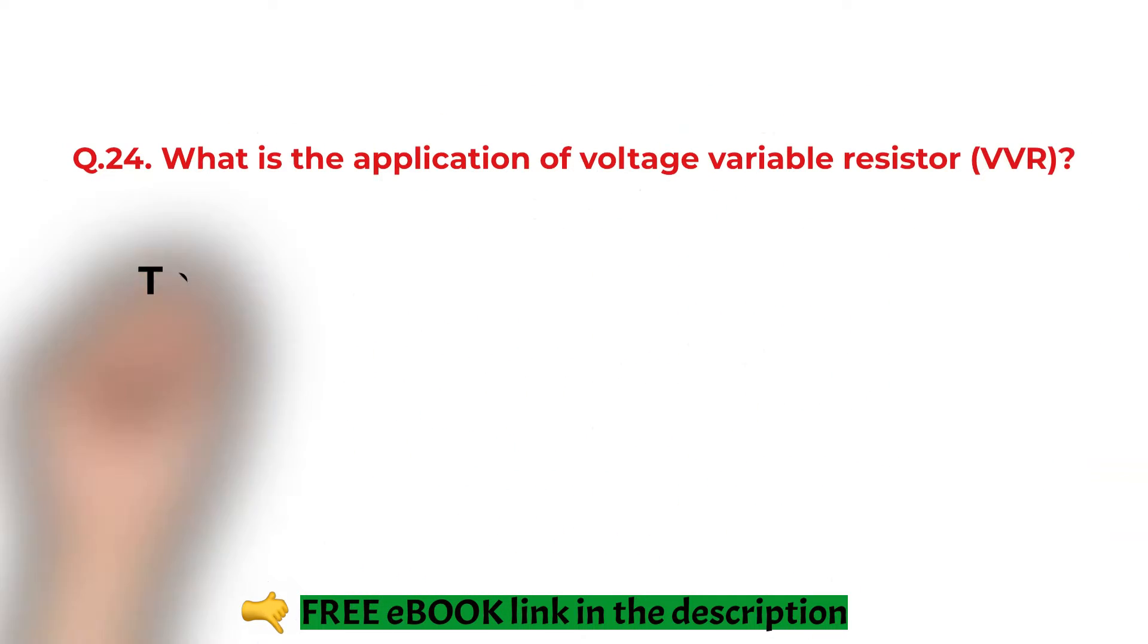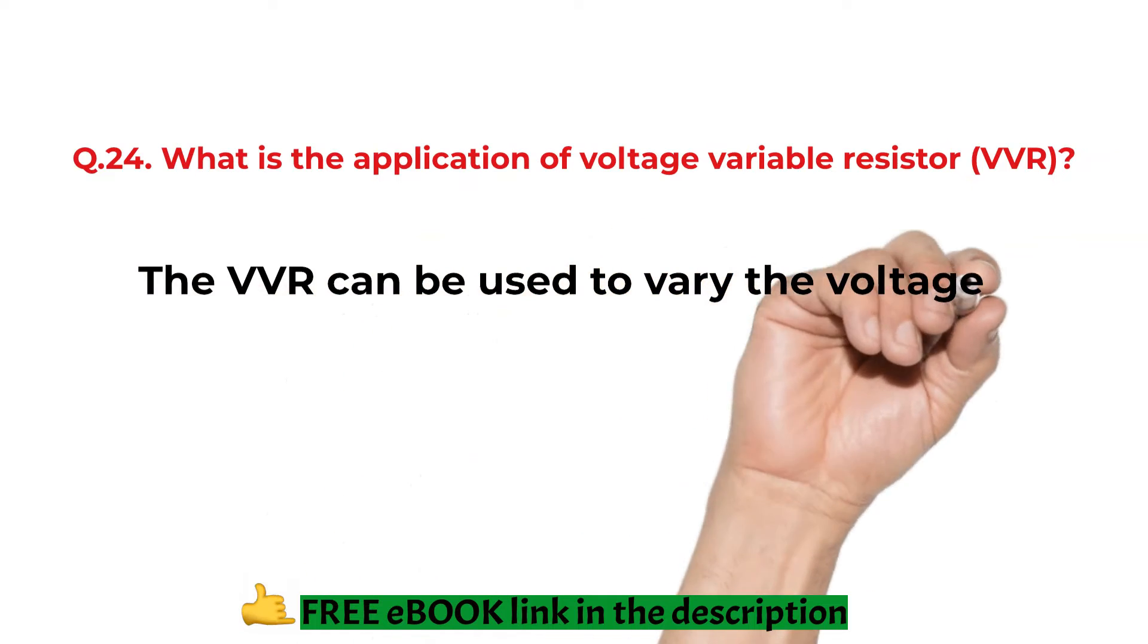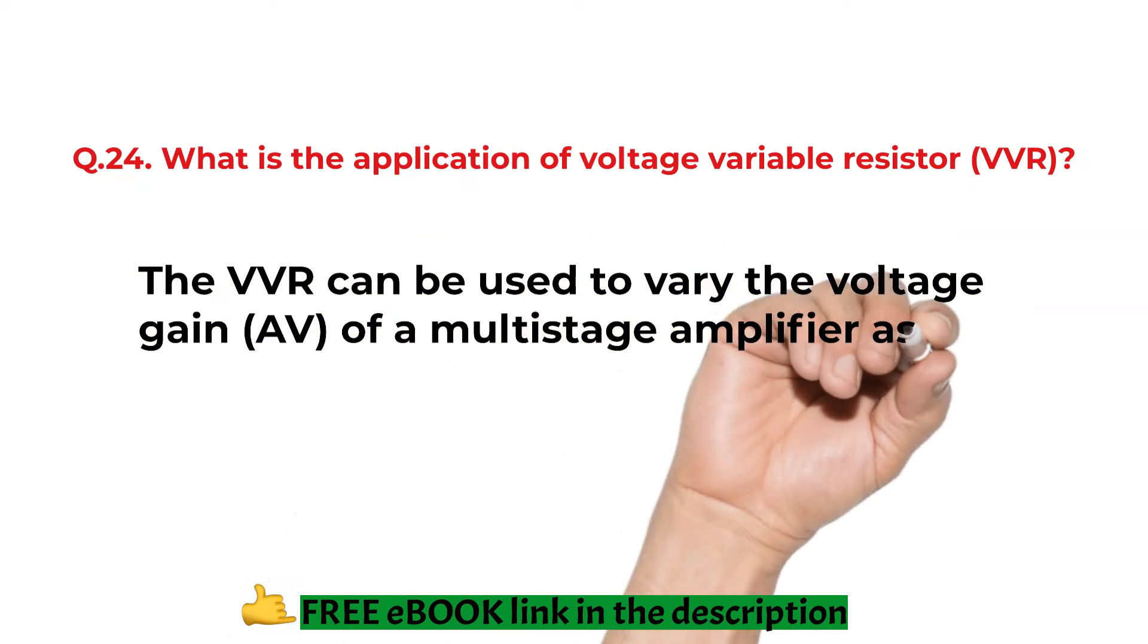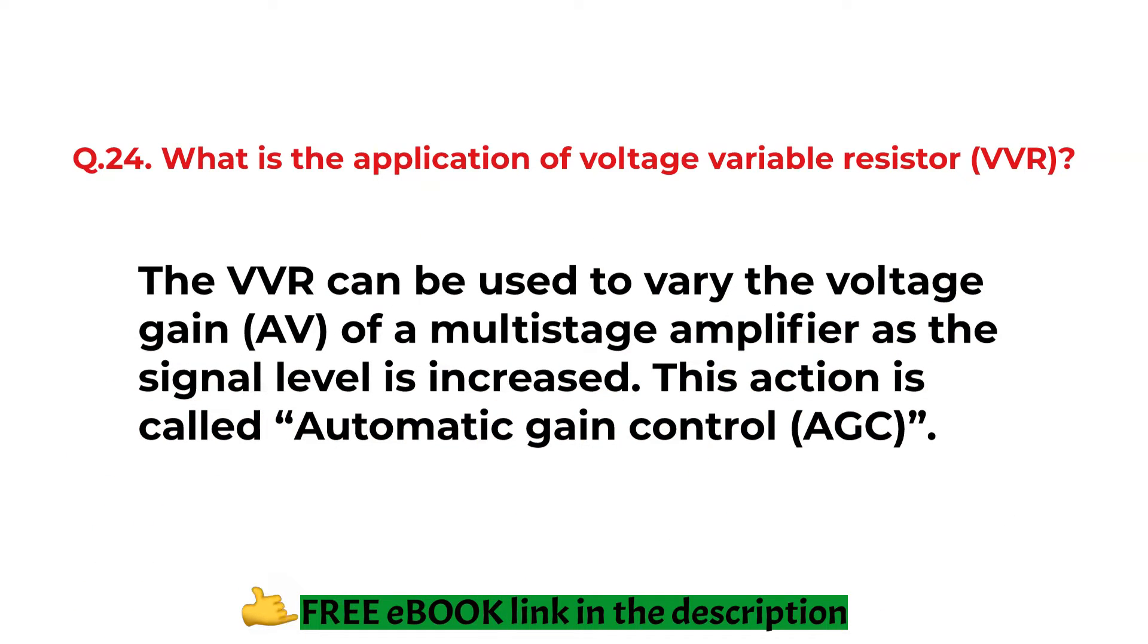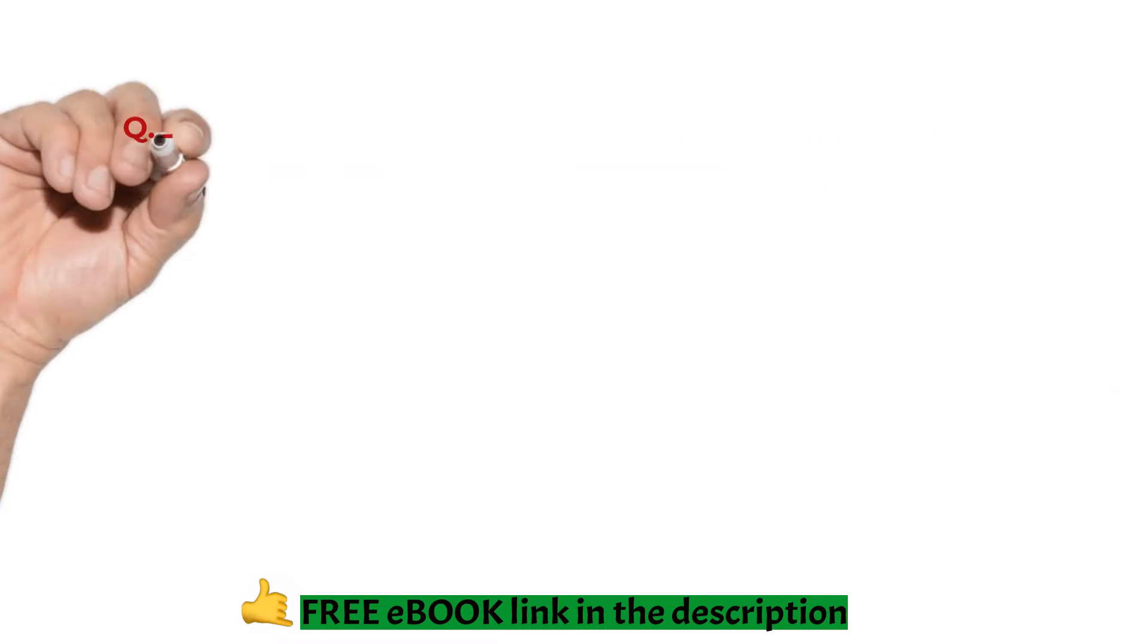What is the application of voltage variable resistor? The voltage variable resistor can be used to vary the voltage gain of a multi-stage amplifier as the signal level is increased. This action is called automatic gain control.